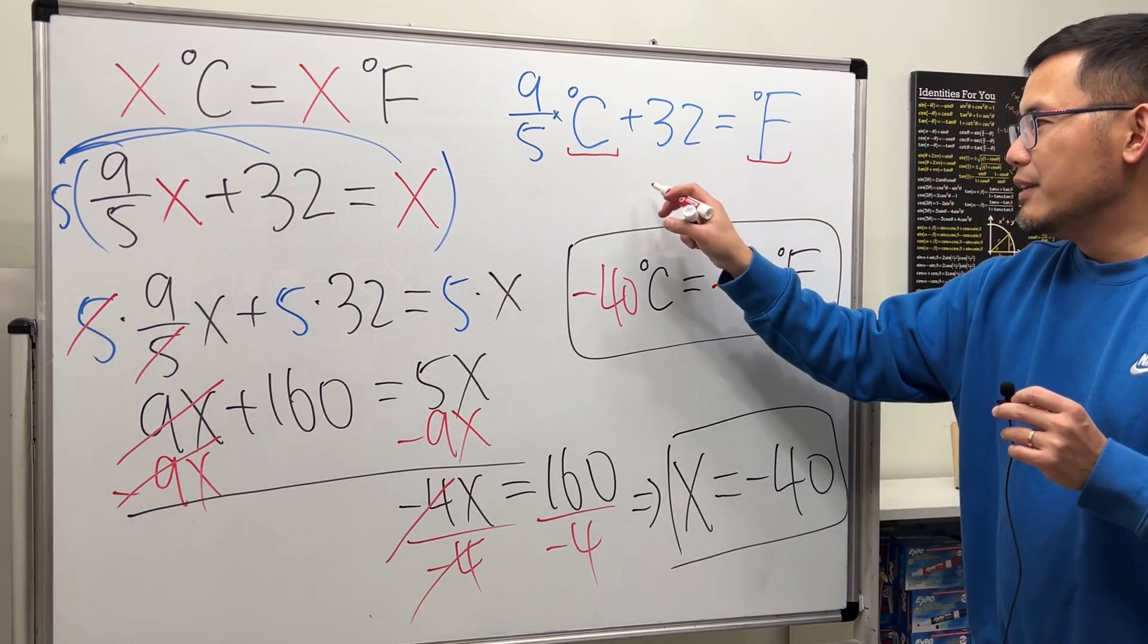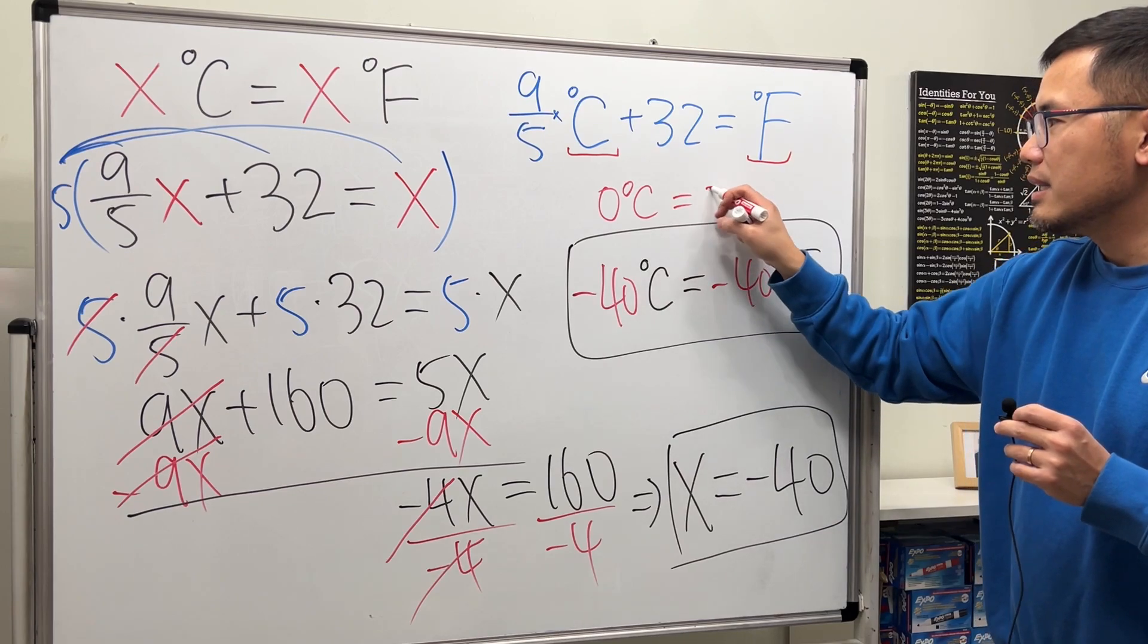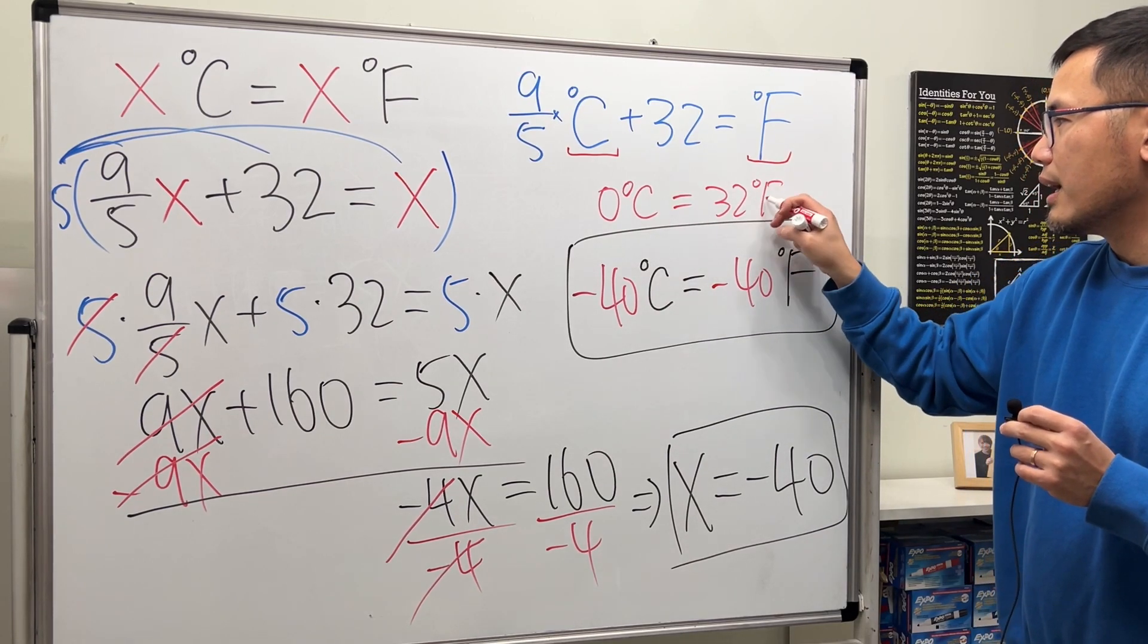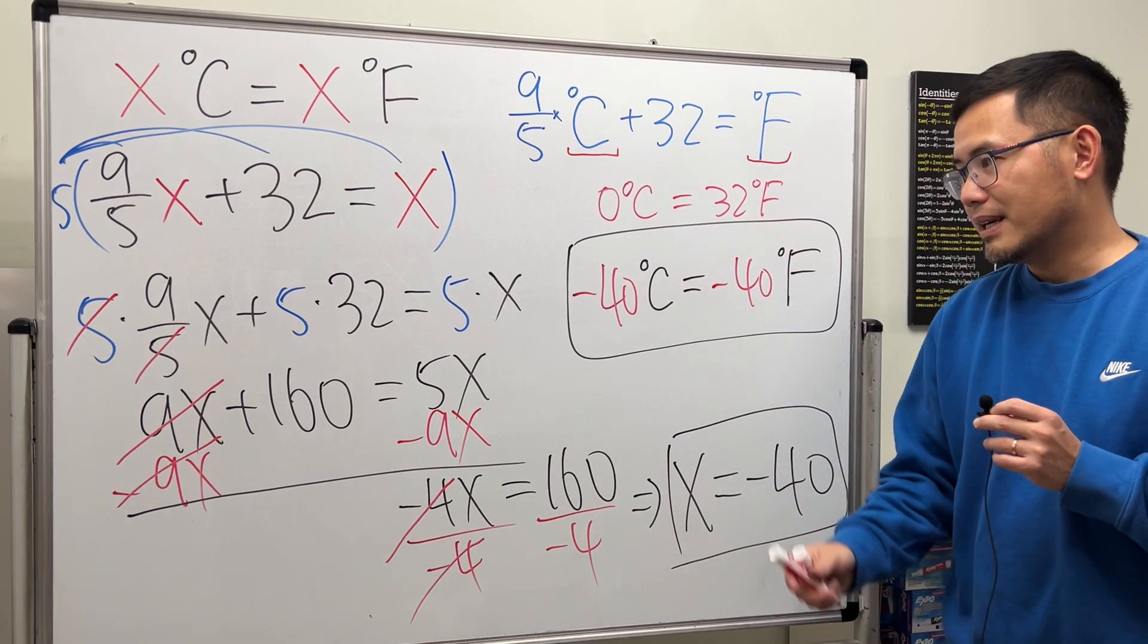Because remember, if you have 0 degrees Celsius, in fact, you get 32 degrees Fahrenheit. Right? The water freezing point. Bye. That's it.